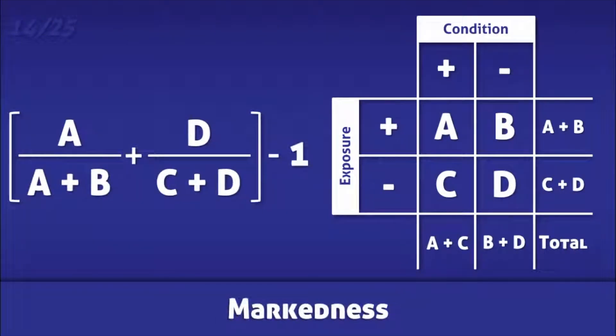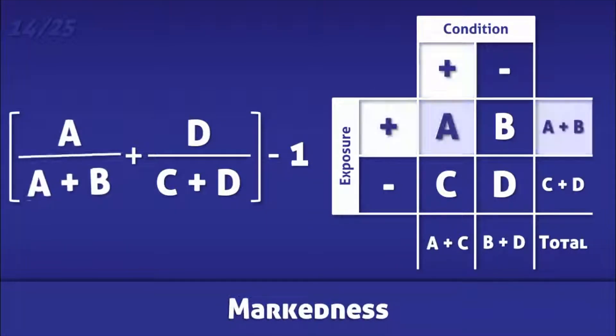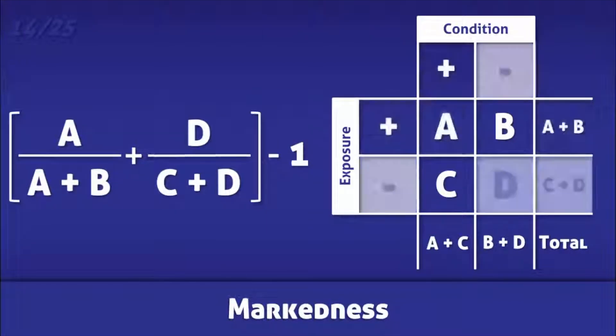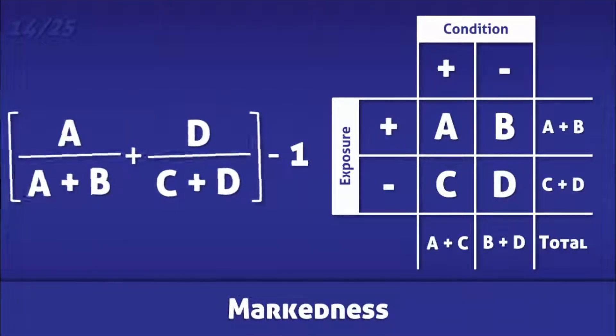Markedness is the probability that the presence of a condition will be ascertained by the test as opposed to by chance. It is calculated by adding the positive predictive value to the negative predictive value and then subtracting one from the sum.